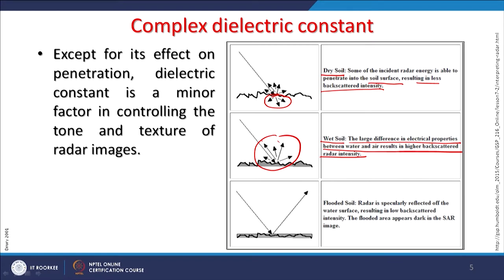There are situations where the entire energy is reflected in just one direction — such as with flooded soil. Radar is specularly reflected off the water surface, resulting in low backscattered intensity, so flooded areas appear dark in SAR images. Even a water body will register as black due to specular reflection, because less backscattering means lower intensity values and darker gray shades.